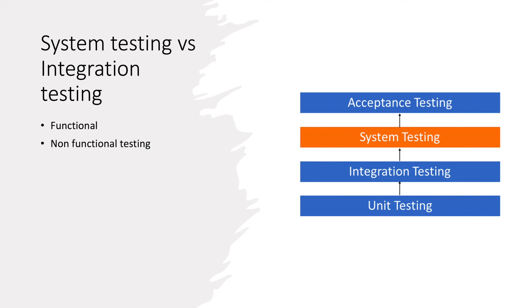Unit testing is done mostly by developers. Sometimes SDETs can do unit testing. Integration testing is done by both QA and developers. System testing can be done by QA. Acceptance testing is when the code goes into production — you are just verifying that everything that should work is working. This is how we can differentiate the different kinds of testing.